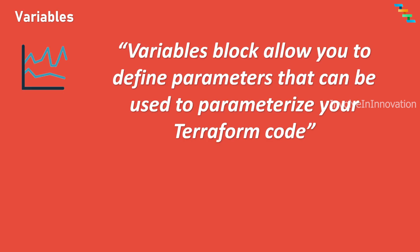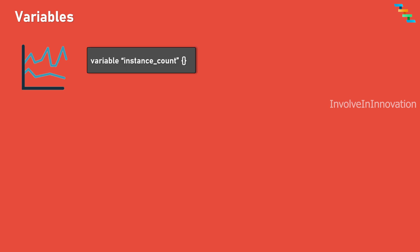Now we will see about the variables block. The variables block allows you to define parameters that can be used to parameterize your Terraform code. They provide a way to make your configurations more flexible and reusable. Variables can be assigned values directly or obtained from input files, environment variables, or command-line arguments. The variable name is the identifier you choose — it should be unique within your Terraform configuration and follow naming conventions. Here the variable name is 'instance_count'.